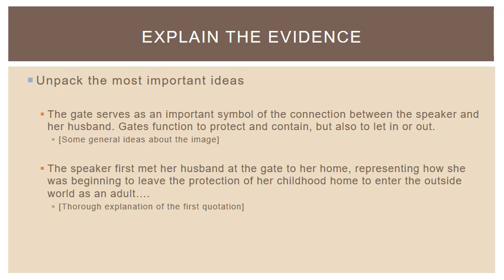Now that we've got our illustration, we can start explaining it. This is where we unpack the most important ideas that we've developed. You're not going to necessarily put in everything you've thought of related to the image of gates or these particular lines — it depends on the specific points you're trying to make, and some ideas might come up in other paragraphs. We can say: "The gate serves as an important symbol of the connection between the speaker and her husband. Gates function to protect and contain, but also to let in or out." We're giving some general ideas about the image and setting up context for understanding the relationship.